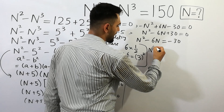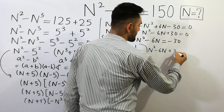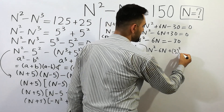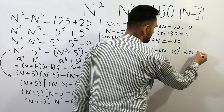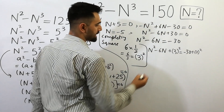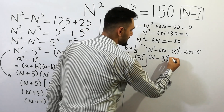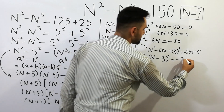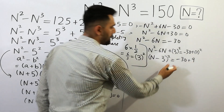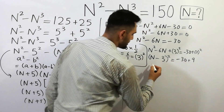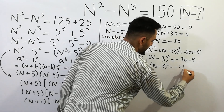Next, in this equation: n squared minus 6n plus 3 squared equals to minus 30 plus 3 squared. And we get (n minus 3) whole squared, and minus 30 plus 3 squared equals to 9, so minus 30 plus 9 equals to minus 21.